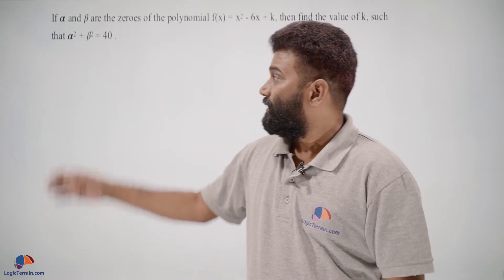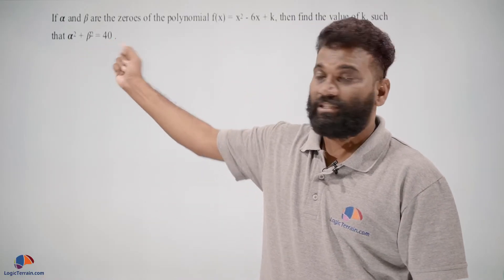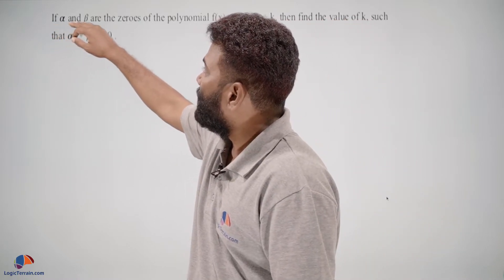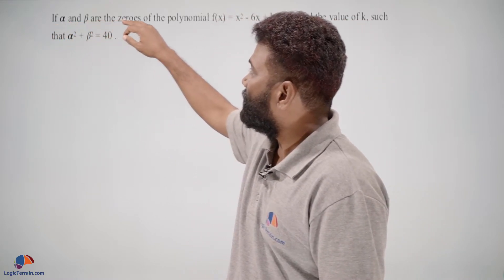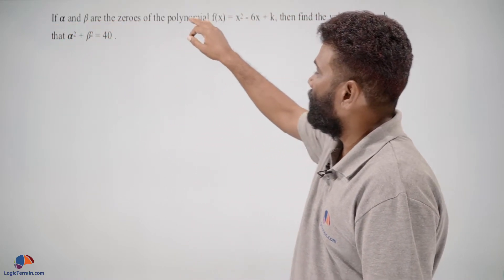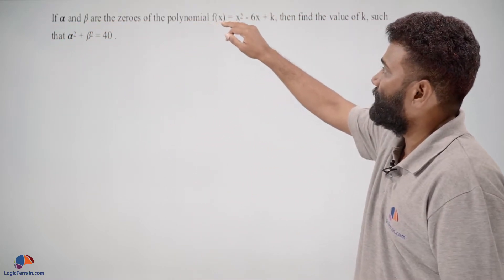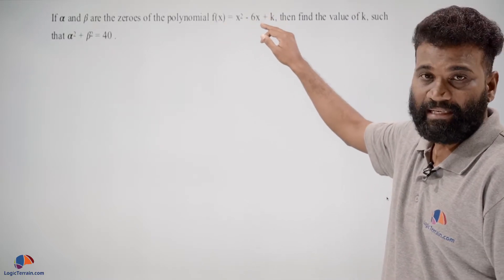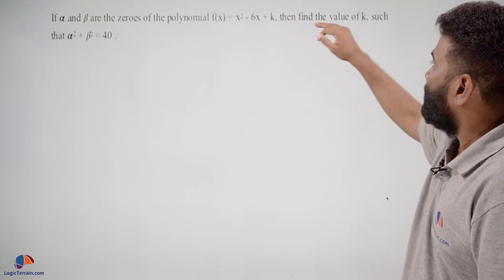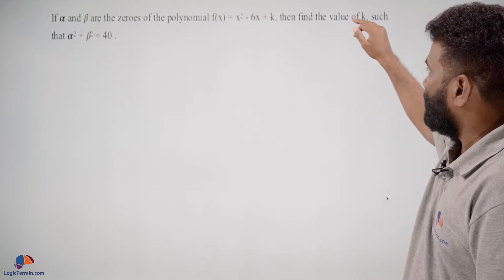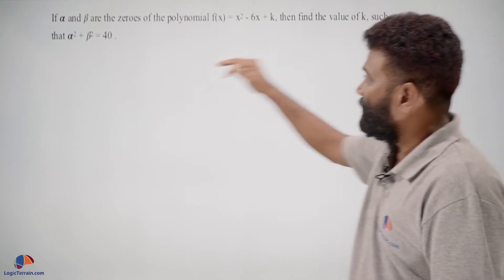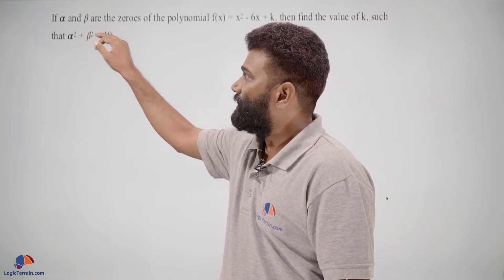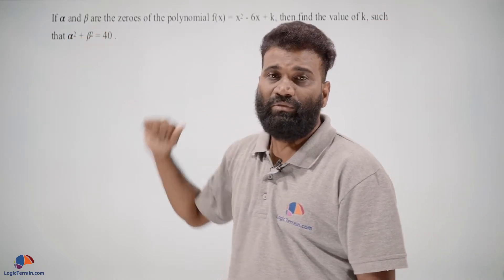Hello students, here is our next question. If alpha and beta are the zeros of the polynomial f(x) = x² - 6x + k, then find the value of k such that alpha² + beta² = 40.